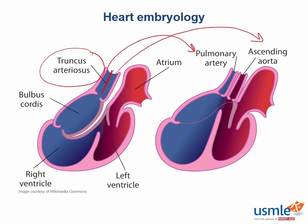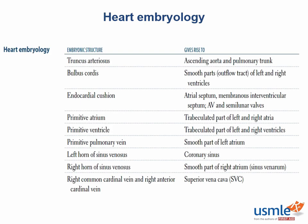Now, don't let the image confuse you here. The pulmonary trunk branches into the right and left pulmonary arteries, and sometimes the pulmonary trunk is just referred to as the pulmonary artery. So once again, the truncus arteriosus goes on to form the ascending aorta and pulmonary trunk.